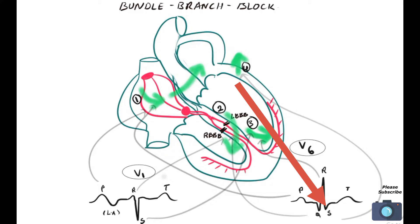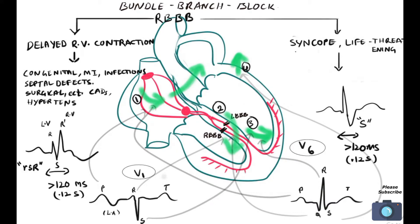The S wave in V6 is indication of the fourth position — the final electromotive forces hitting the base of the ventricle. Now, the right bundle branch block. The block is caused by degeneration, congenital causes, myocardial infarction, infection, septal defects, surgical procedures, coronary artery diseases, and hypertension — these are the usual causes of right bundle branch blockage.